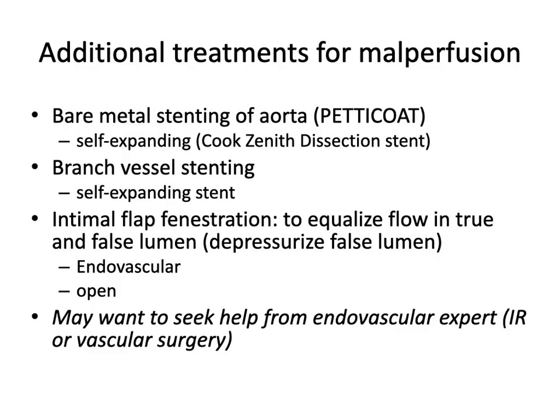Additional treatments for malperfusion — presuming TVAR has already been performed and there is residual malperfusion — include the petticoat technique: extension distally with a bare metal self-expanding stent. The only one currently available in most of the world is the Jotec E-nya dissection stent, which allows extension down into the thoracoabdominal aorta to help re-expand the true lumen. For patients with static malperfusion, you may need to perform branch vessel stenting with a self-expanding stent. The true lumen can also be expanded by an infrarenal intimal flap fenestration.